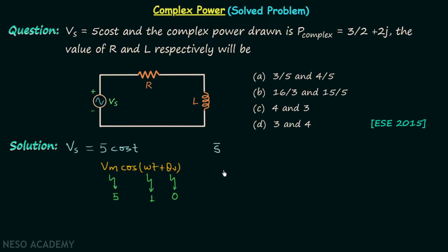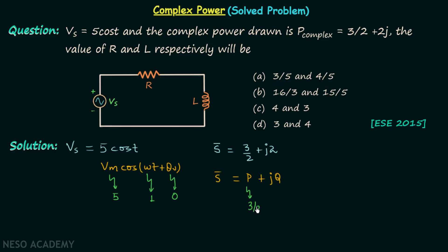The complex power drawn is equal to 3/2 + j2. When we compare this with the standard form — complex power equals real power plus j times reactive power — we find the real power P is equal to 3/2 and the reactive power Q is equal to 2.